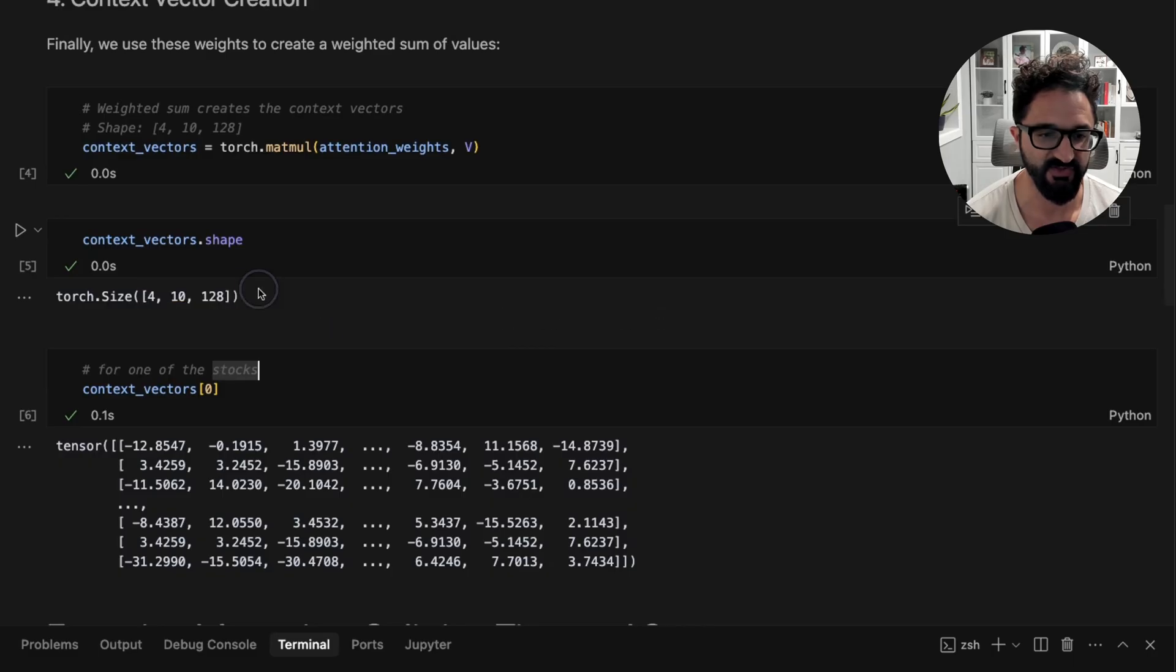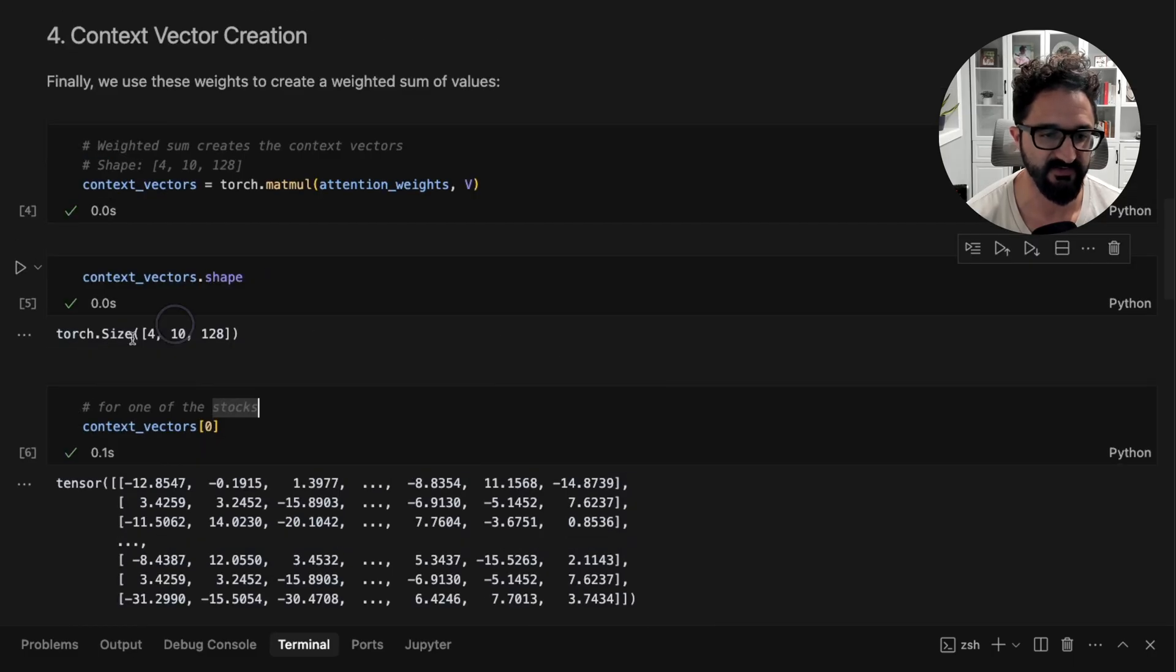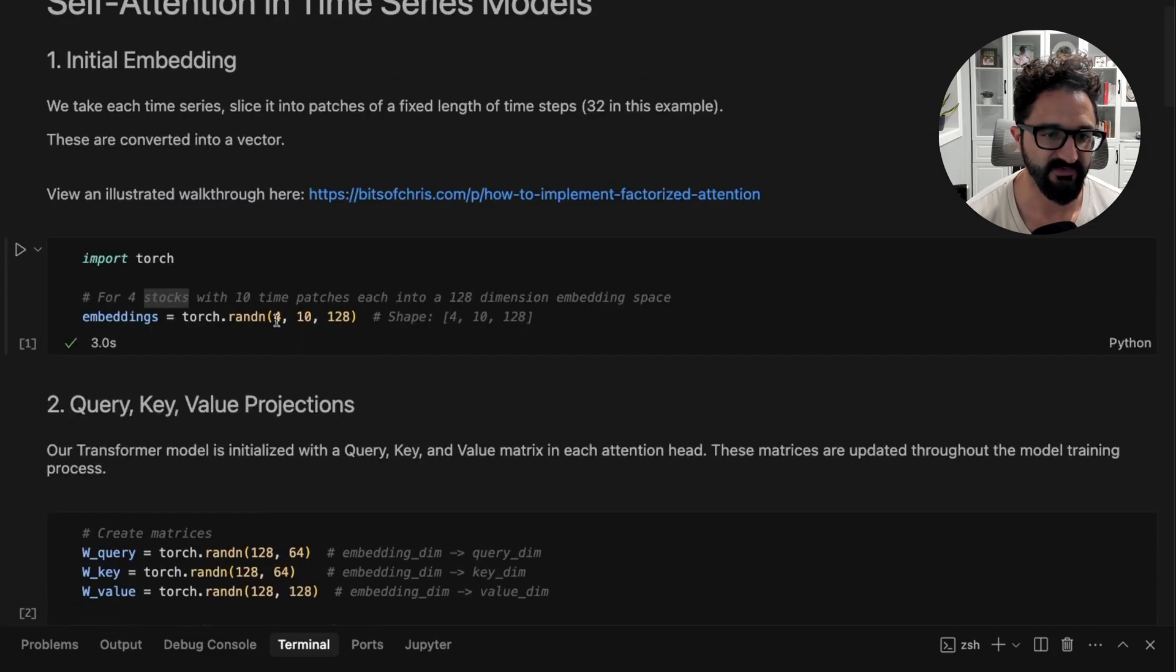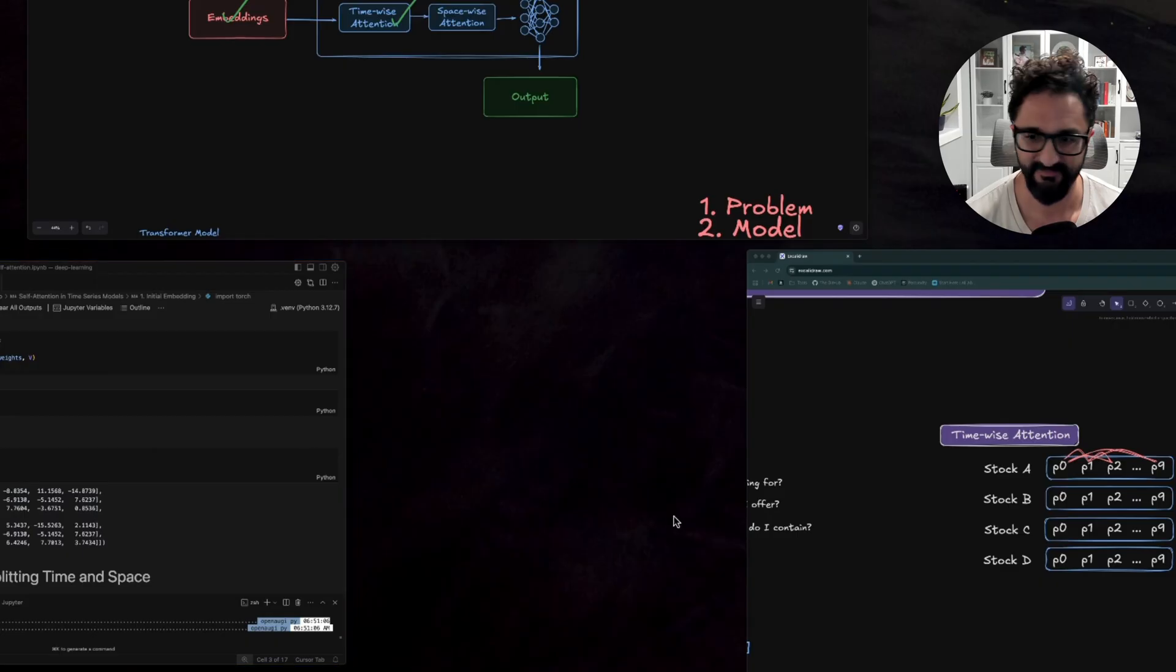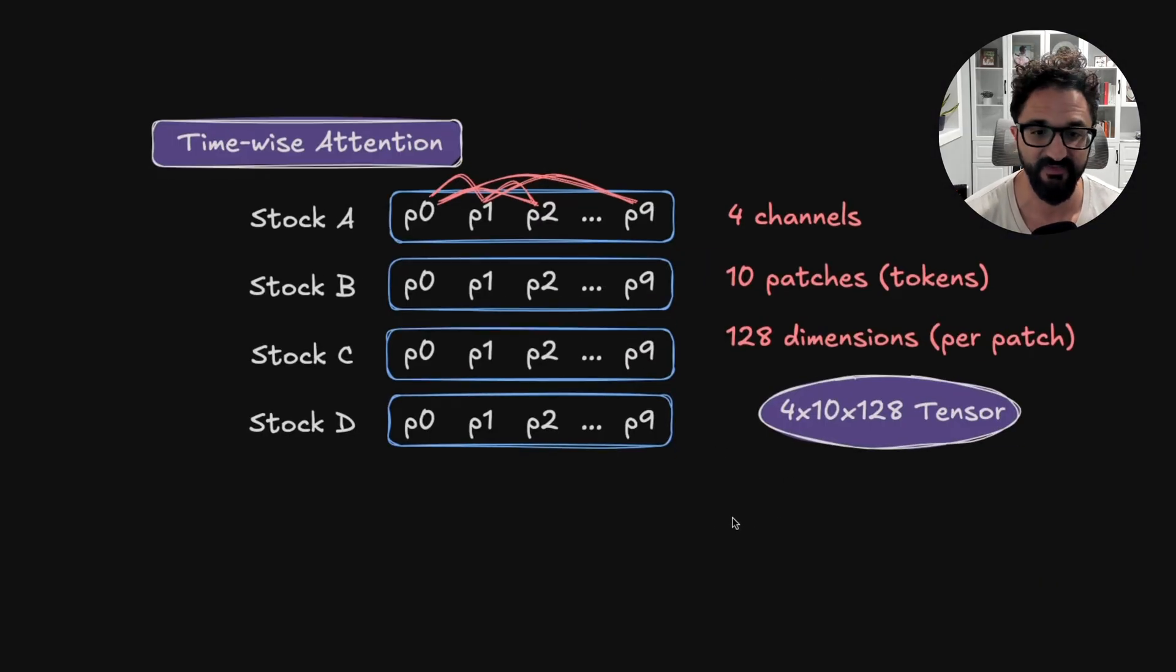Now to review, you can see we have this 4, 10, 128 shape. That shape didn't really change from our input. This is the same resulting shape of our tensor from when we created our embeddings. That's because the data is already shaped for timewise attention. What this looks like in the attention mechanism is we have each channel being a different stock—that's our 4. And then we have 10 patches: P0, P1, all the way to P9. Each one of these patches is the token that's attending to each other one in this series. None of them are talking between channels here. They're all just talking within the series. That's what attention is being computed between. We get this resulting 4 by 10 by 128 tensor.